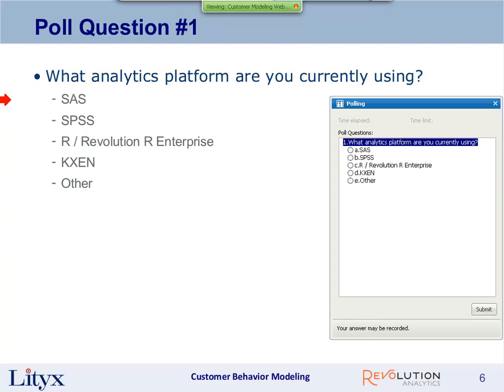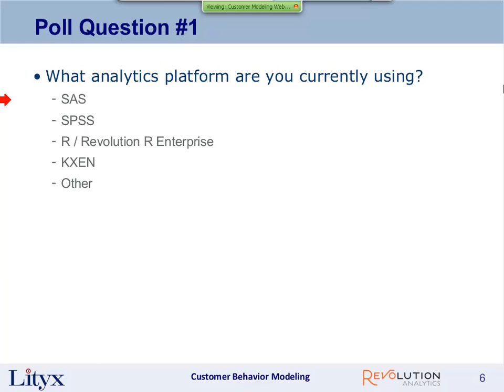And I believe that brings us to our first poll question. We're just wondering, of those of you in the audience, what analytics platform are you currently using for building your analytic models? Is it SAS? Is it SPSS? Is it R or Revolution R Enterprise? Or is it KXEN? Or if you're using some other system or not actually building analytic models at the moment, please choose other. Paul, I know that you use Revolution R Enterprise as the analytic engine behind Litics IQ. Can you tell us a little bit about why you chose Revolution R Enterprise for that application?